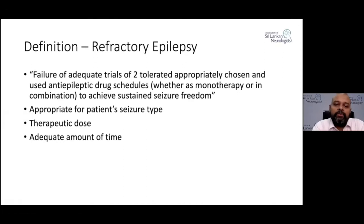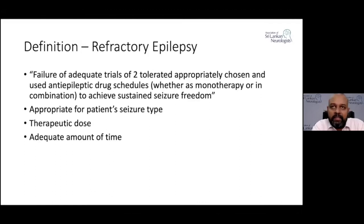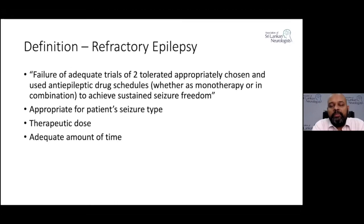If you ask whether there is a particular duration required before classifying patients as pharmacoresistant, that's a little controversial with a few schools of thought. Certain authorities suggest that with two drugs, if you have a seizure frequency of two or more per month and it goes on for two years, that would be an adequate amount of time. However, that duration is now considered shorter.